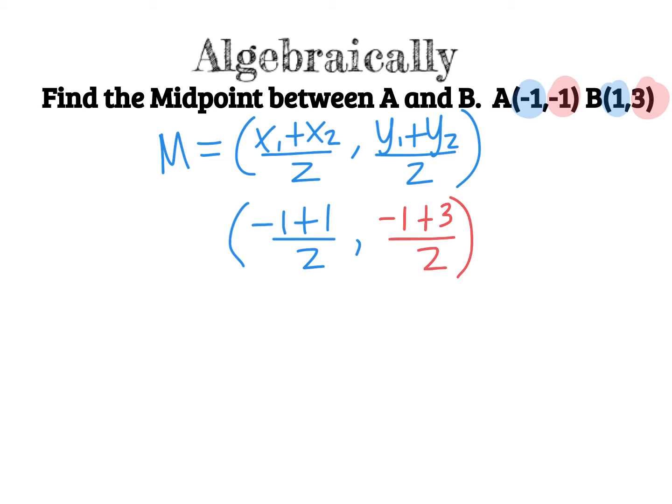And all you have to do now is simplify. So I'm going to, I can put this into decimals, I can solve them separately, or I can do this in my head. And I'm going to go ahead and do that. So on the left we have negative 1 plus 1 is 0. 0 divided by 2 is 0. And then on the right we have negative 1 plus 3 is 2. 2 divided by 2 is 1. The midpoint between A and B is 0 comma 1. And that is a location on the graph. This is not a distance. This is not a number or a length of measurement. This is a location.